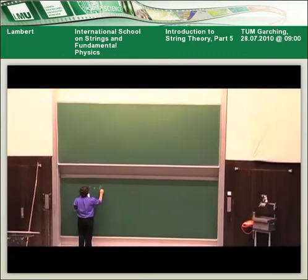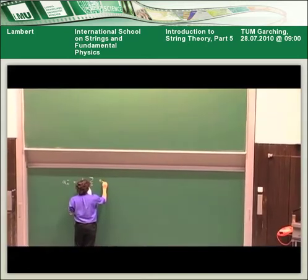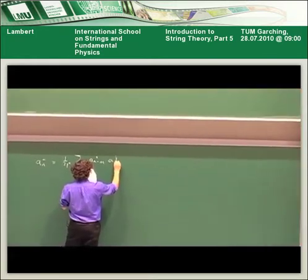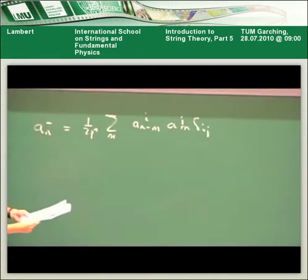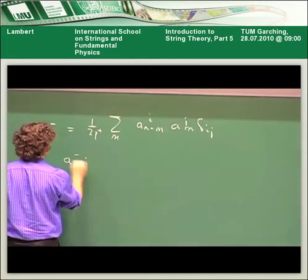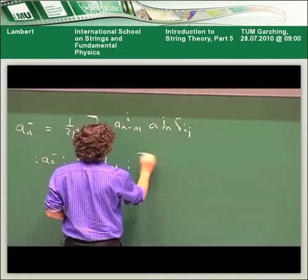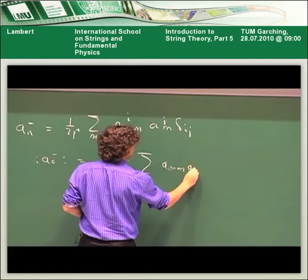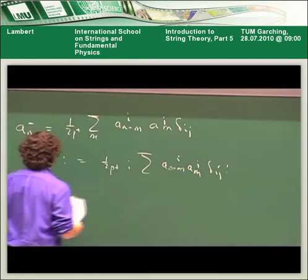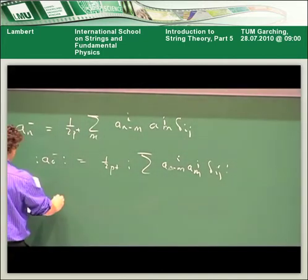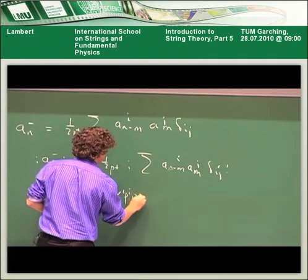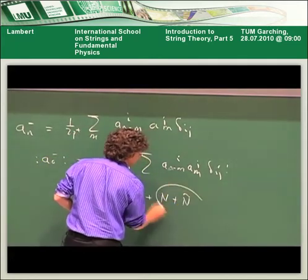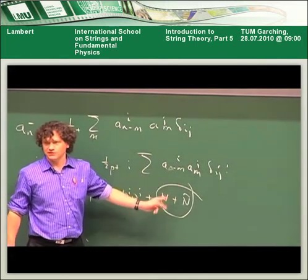We went through the problem to derive aₙ⁻, which is 1 over 2p⁺ times a sum over m. This is only for n not equal to 0 — there isn't an a₀ oscillator; I haven't defined one. And then later I said we have to normal order a₀ — well, there isn't an a₀, so you don't have to normal order it.